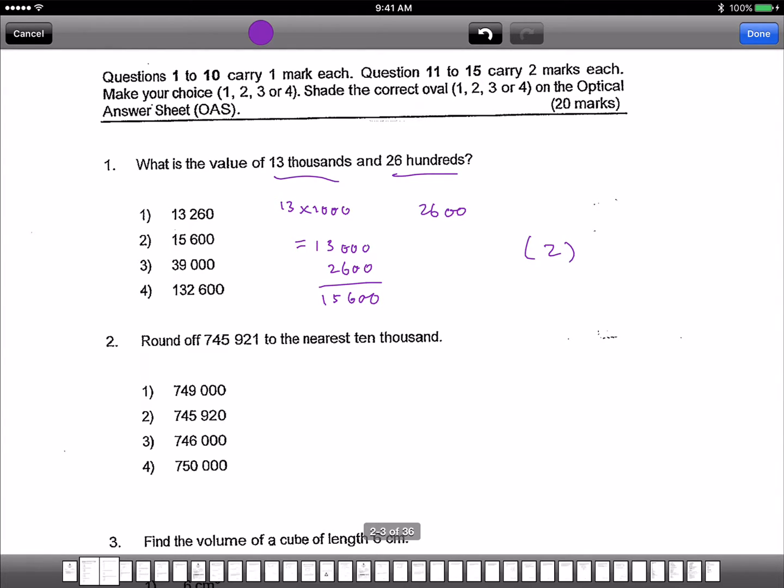Next one. Round off 745,921 to the nearest 10,000. Now which one is the 10,000? It is the number 4. So you look at 5. Now 5 is 5 or greater than 5 obviously. So obviously you have to upgrade this. So the 4 will go up to 5 and therefore the answer has got to be 4.